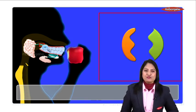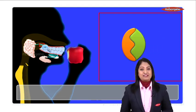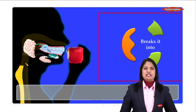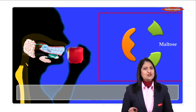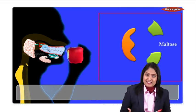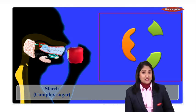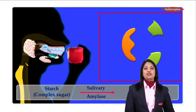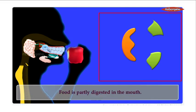The starch is acted upon by this enzyme and it is broken down into comparatively a simpler substance called maltose. Maltose is comparatively a simpler sugar, a disaccharide. So in other words, can we say starch, a complex sugar present in the food, is acted upon by salivary amylase and is broken down into comparatively simple sugar called maltose in the mouth?